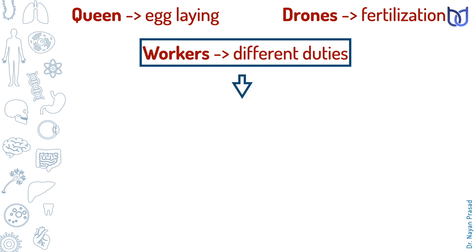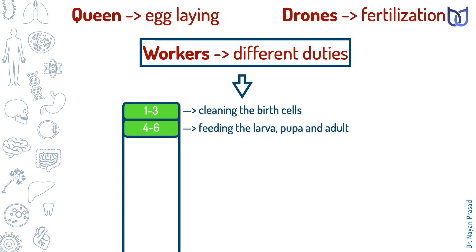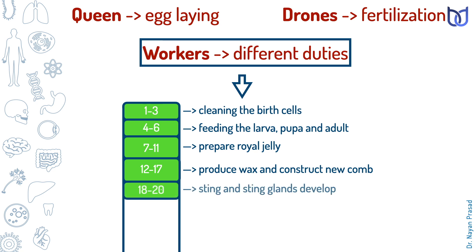In the beginning, the worker bee performs the duty of cleaning the brood cells and the hive for the next three days. From four to six days, workers perform the duty of feeding larvae, pupa, and adult. From seven to eleven days, they prepare royal jelly. From 12th to 17th days, workers produce wax and construct new comb. From 18th to 20th days, sting and sting glands develop in them, and they start providing protection. They work like soldiers.